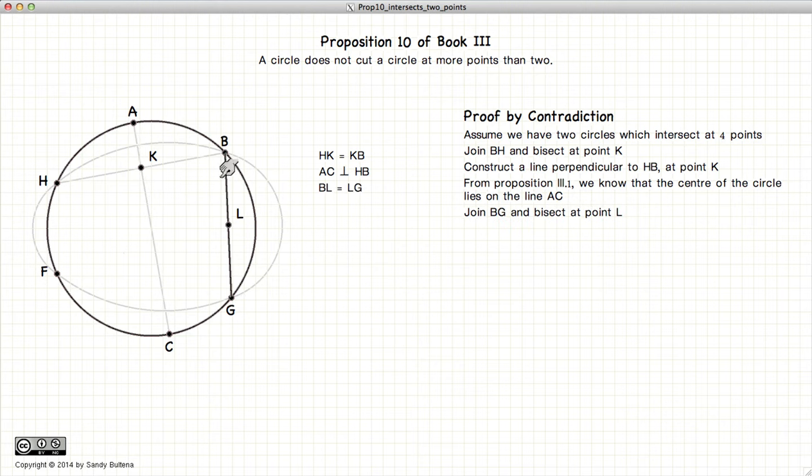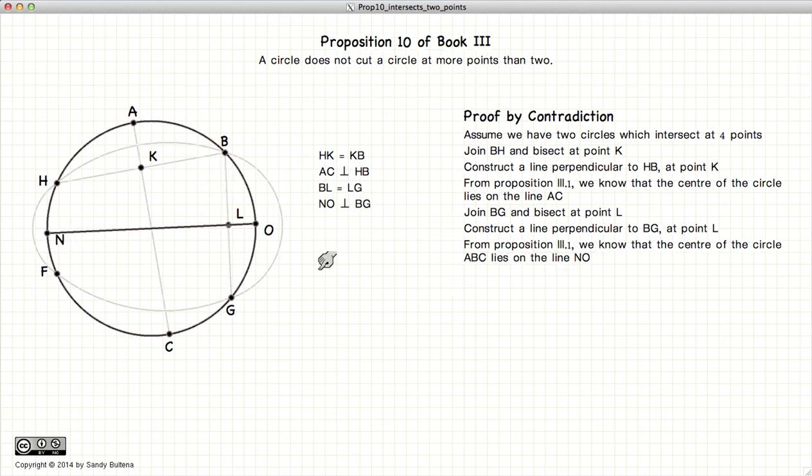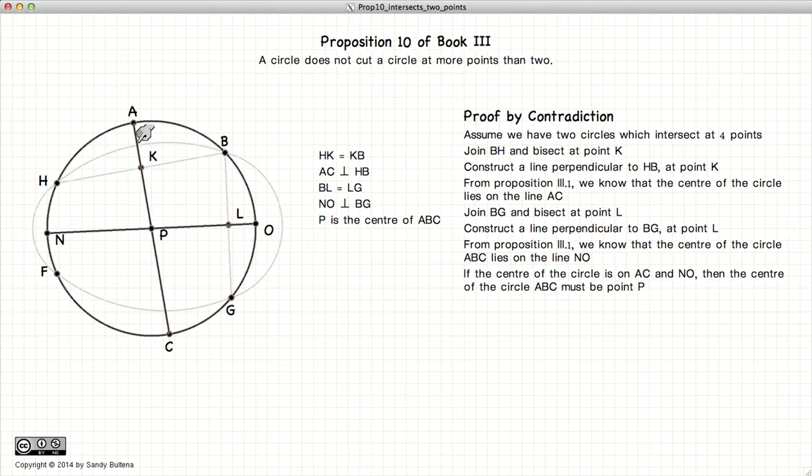Now we're going to do the same thing with BG. L is the midpoint. Draw a line perpendicular. And since the center of the circle must also be on this line, we have our center of the circle is point P. This line and this line intersect at the center of the circle ABC at point P.